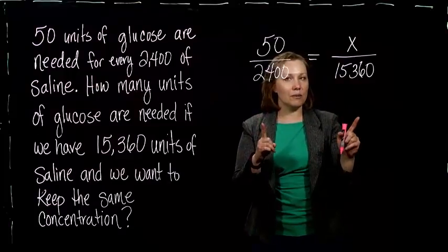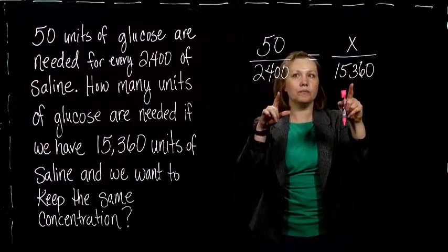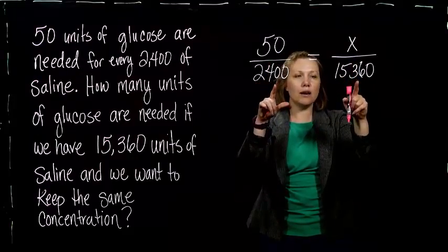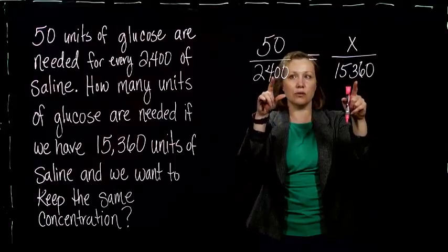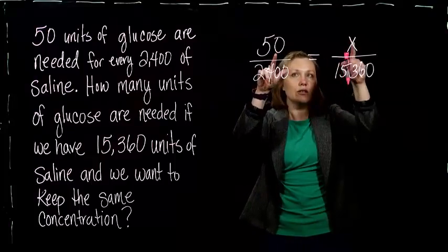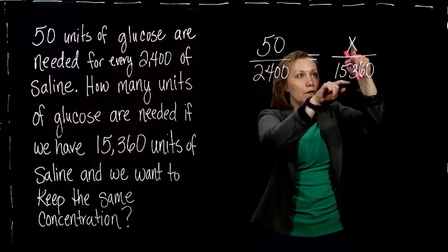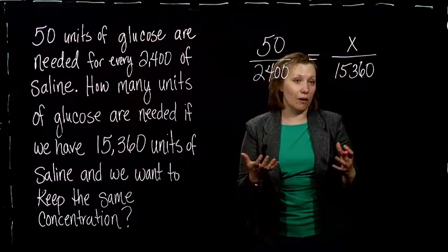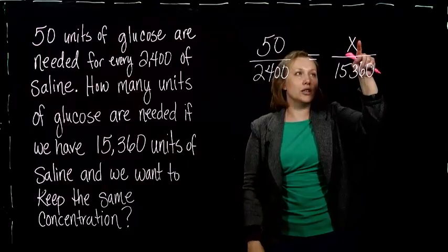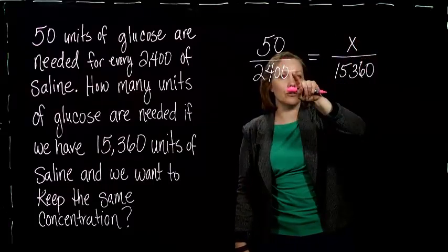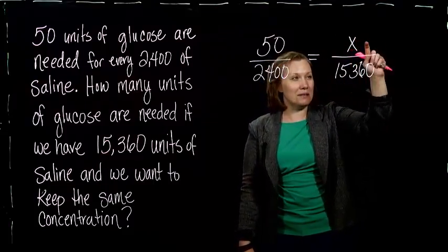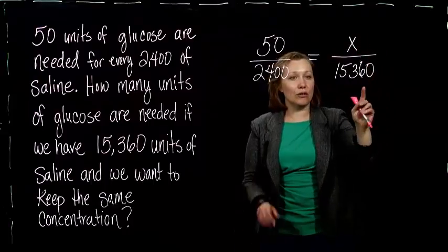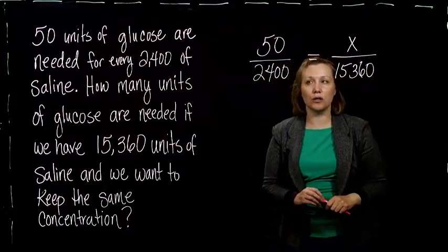The one thing we have to be super careful about is making sure that what's in the bottom of our ratios matches up. So saline and saline, glucose and glucose. If you flop one of them, we wouldn't get what we were looking for. We wouldn't get a ratio of glucose to saline. And if we flop them, it would be saline to glucose. So that wouldn't be a proportion.